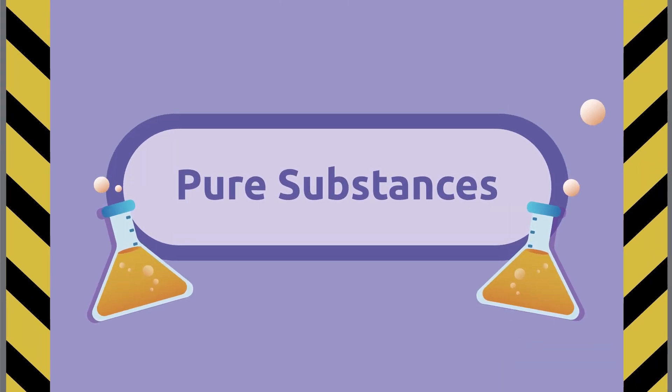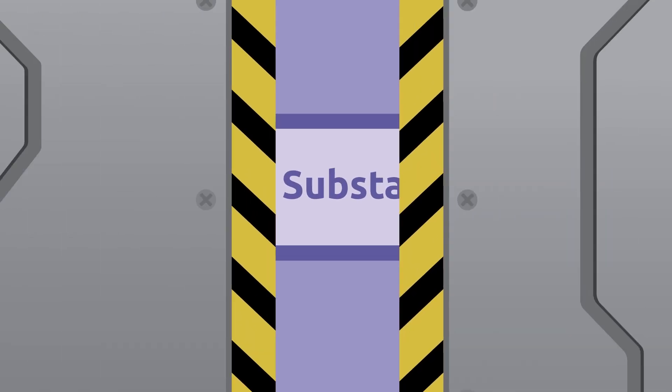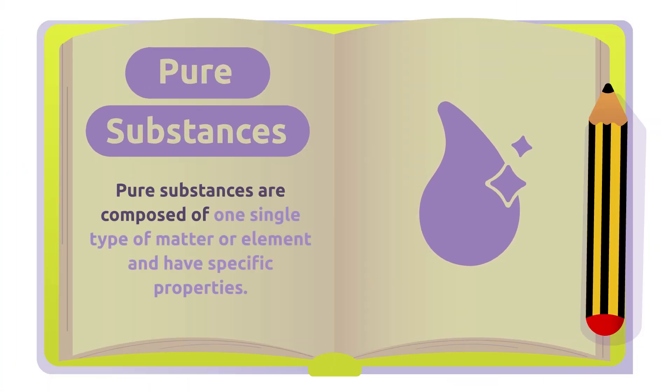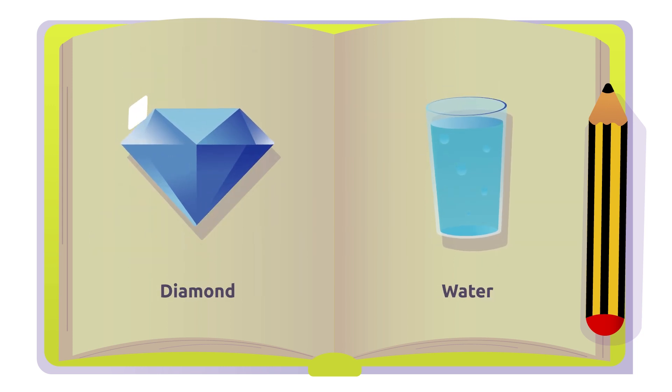Pure substances. Pure substances are composed of one single type of matter or element that have specific properties. For example, water and diamonds are pure substances. In a physical change, the composition of these substances wouldn't be altered.